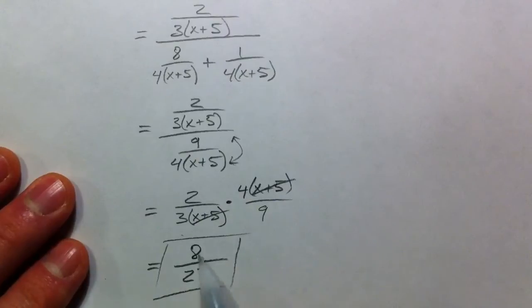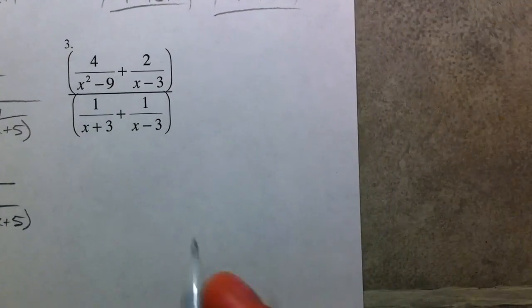8 and 27 don't have anything in common because that's 2 times 2 times 2 and 3 times 3 times 3. Alright, last example.